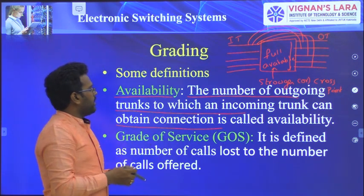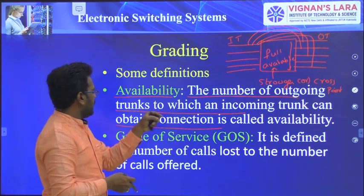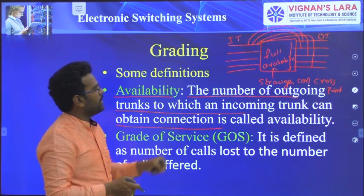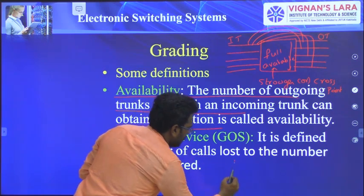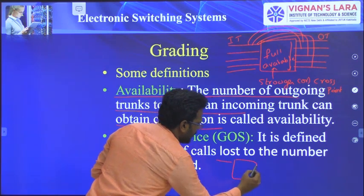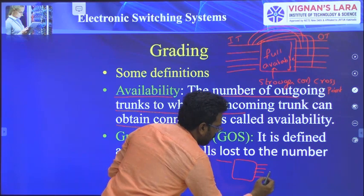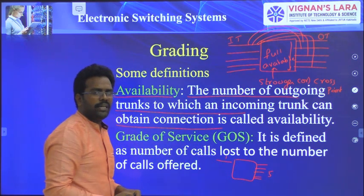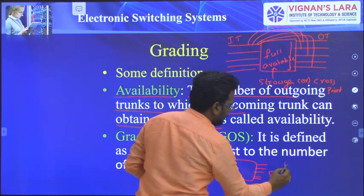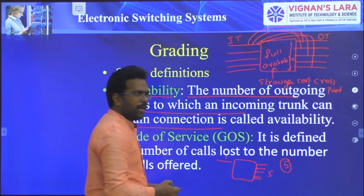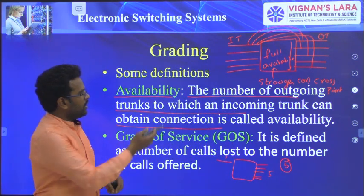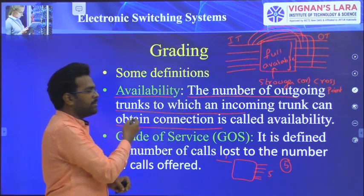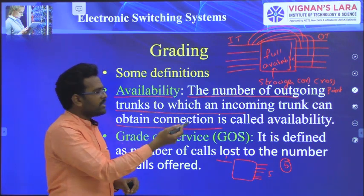The number of outgoing trunks to which an incoming trunk can obtain a connection is called availability. For example, if this inlet can access 5 outlets, then we say the availability is 5.